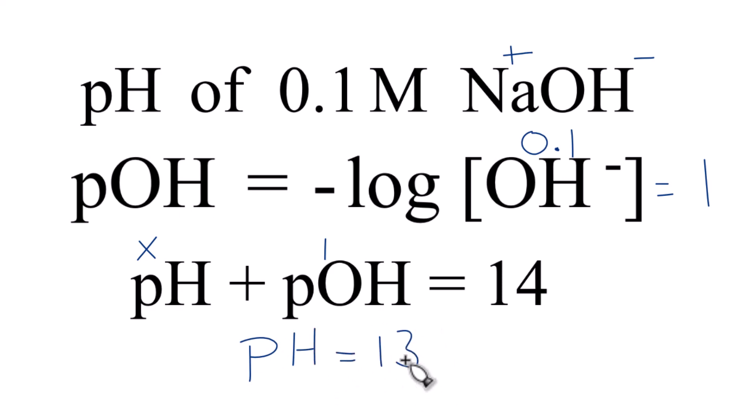And our pH and pOH adds up to 14. 13 plus 1. So that's how you do it. You find the pOH, because we have a base here. Then you use this equation here to figure out the pH. And it's not surprising we have a pH of 13. We have a base, so it should be above 7. And it is.